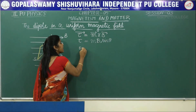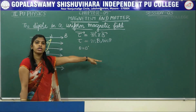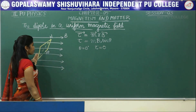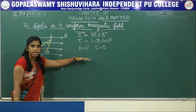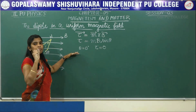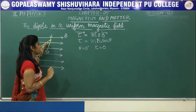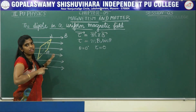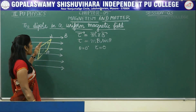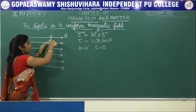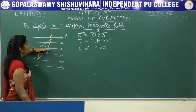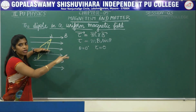If theta is equal to 0 degrees, sin 0 is 0, therefore the torque experienced will be 0. That is, if the magnetic needle is placed along the magnetic field, it does not experience any torque. That means this will be the equilibrium position. The magnetic needle always tries to align itself in the equilibrium position, which is along the direction of the magnetic field.